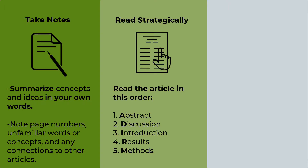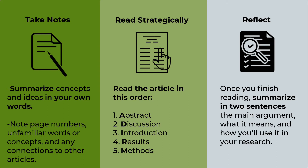Read scholarly articles in the following order: abstract, discussion, introduction, results, and methods. The abstract will tell you right away if the article is relevant to your needs or not. Next, skip ahead to the discussion to learn about the article's findings. When you've finished the article, summarize it in two sentences on what the main argument or idea was and what it means or how you can use it in your research.